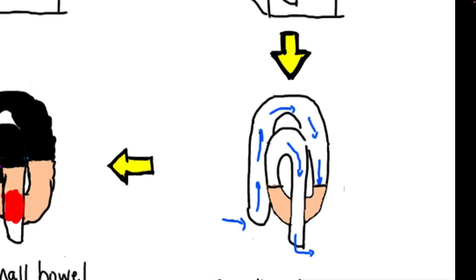You can see in this drawing that there are air fluid levels. The air fluid levels are normal as long as they are few and they are not in dilated or prominent caliber small bowels.